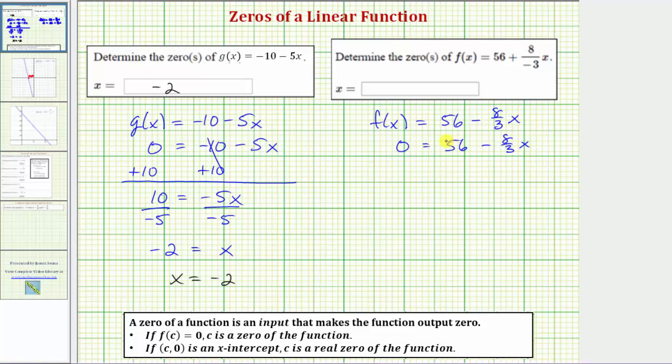First step is to add or subtract to isolate the variable term. This time because we have a zero on the left side, instead of subtracting 56 on both sides, let's go ahead and add eight-thirds x to both sides.